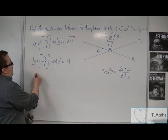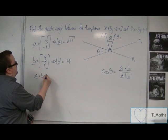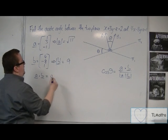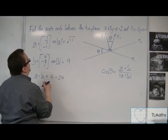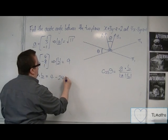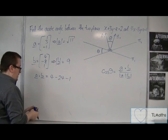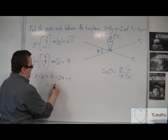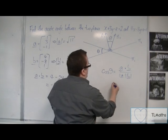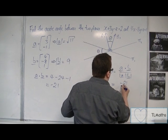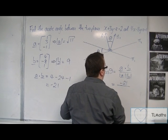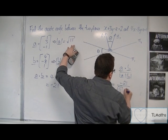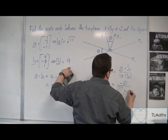Then we've got a dot b, so we've got 1 times 4 plus 3 times -8, so -24, and -1 times 1 is -1. So we've got 4 take away 24 take away 1, which is -21. So this is equal to -21 over mod a, which was root 11, times mod b, which was 9.